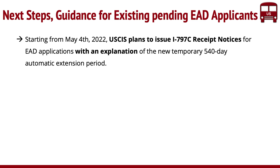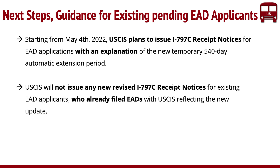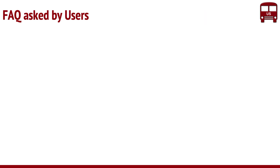In terms of next steps and guidance, USCIS has planned to issue new I-797s for all applicants from today — they will very likely issue I-797 receipt notices with an explanation of this 540 days. But they will not issue these retroactively for already existing ones who already got EAD receipt notices. Even though it says 180 days on an old receipt notice, it will still be valid — all you need to do is attach the web page for that.